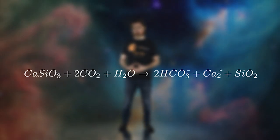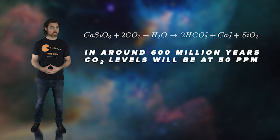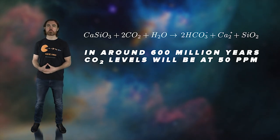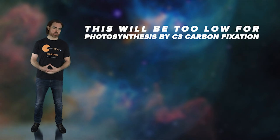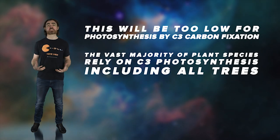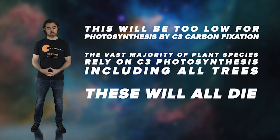Now, normally we associate higher temperatures with increased CO2. CO2 warms the surface due to its greenhouse effect. And warm oceans are less able to absorb carbon, so more CO2 is released. This dangerous feedback cycle dominates on the timescales of the glaciation cycle and of anthropogenic climate change. However, over hundreds of millions of years, CO2 will actually be lost due to rising temperature. See, the rate of weathering of silicate rocks increases with temperature, and that process sucks in CO2 to produce carbonate minerals. In around 600 million years, CO2 levels will be at 50 parts per million compared to the current 400 parts per million. And this will be too low for photosynthesis by C3 carbon fixation. The vast majority of plant species rely on C3 photosynthesis, including all trees. So these will all die.